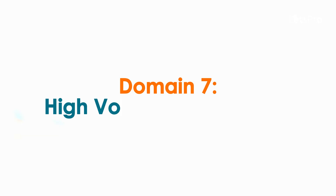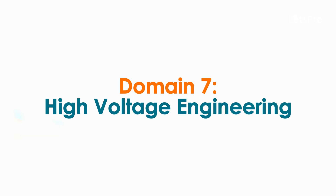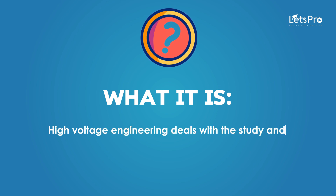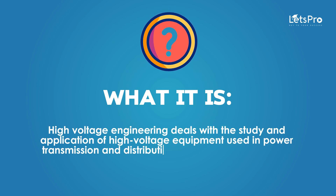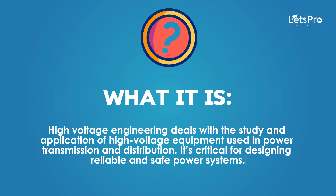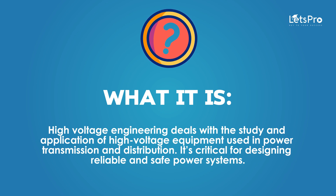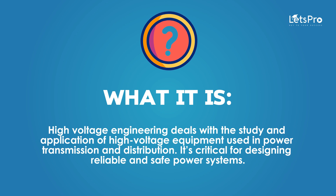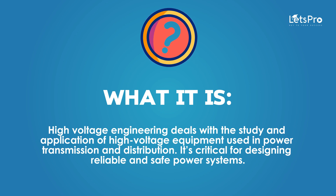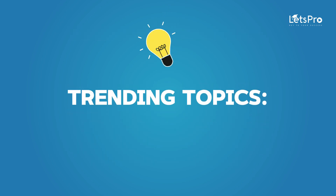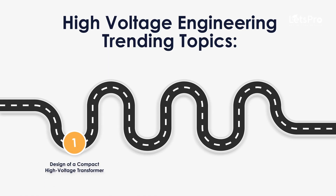Domain 7: High Voltage Engineering. High Voltage Engineering deals with the study and application of high-voltage equipment used in power transmission and distribution. It's critical for designing reliable and safe power systems. Trending Topics: Design of compact high-voltage transformer, Insulation testing using partial discharge analysis, Lightning protection system for buildings, High Voltage DC Transmission system, Arc Flash detection and mitigation system.